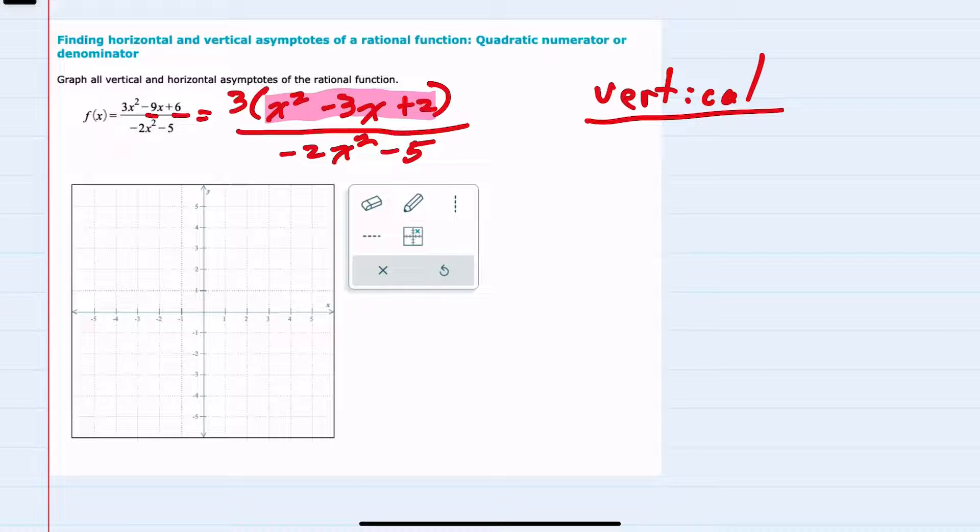So my vertical asymptote would just be where that denominator equals 0. If I set the denominator here, -2x² - 5 = 0, and I attempt to solve it for x.